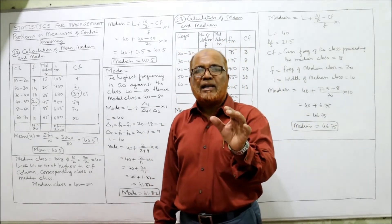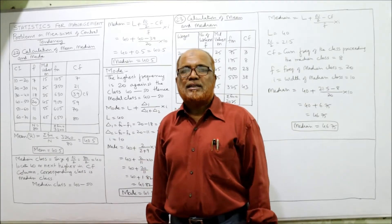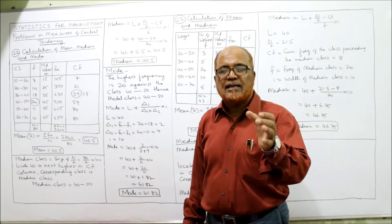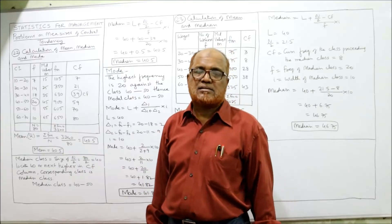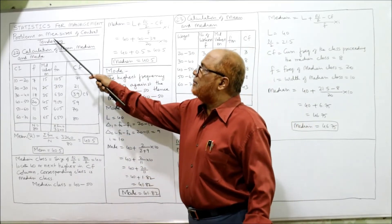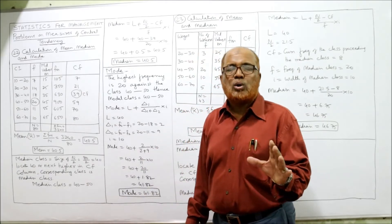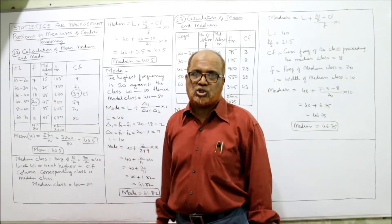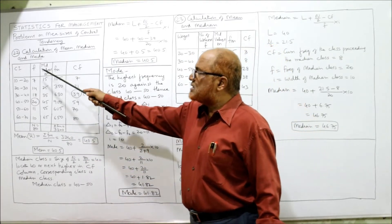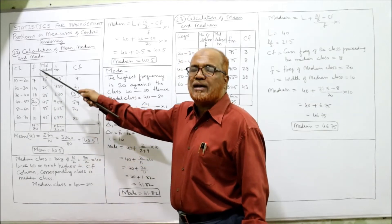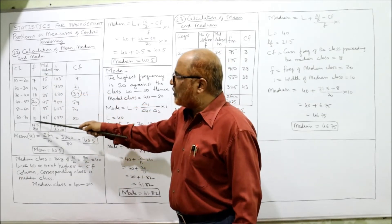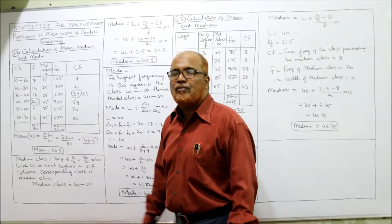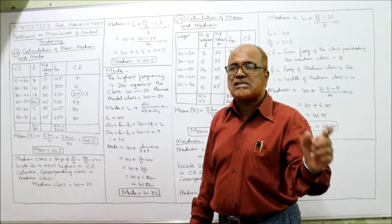Mode is that value which occurs the most number of times — the class where frequency is highest. Mode can be calculated by inspection or by grouping and analysis. When a problem asks for mean, median, and mode together, use inspection directly; otherwise the problem becomes very large. By inspection, the highest frequency in the frequency column is 20, and the corresponding class is 40–50. So the modal class is 40–50.